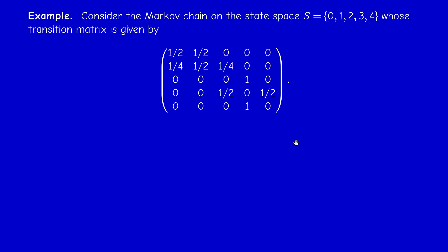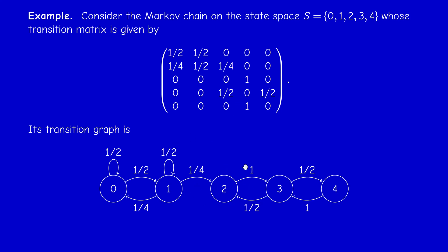Let us illustrate these concepts on a simple problem. We have a Markov chain on the state space {0, 1, 2, 3, 4}, and the transition matrix is given. If you look at the transition matrix, you cannot really analyze what is happening, so you have to draw the transition graph. If you look at the transition graph, you will see that there are two communication classes: {0, 1} is one class, and {2, 3, 4} is another class, and they don't communicate — there is a one-way arrow from the first class to the second.